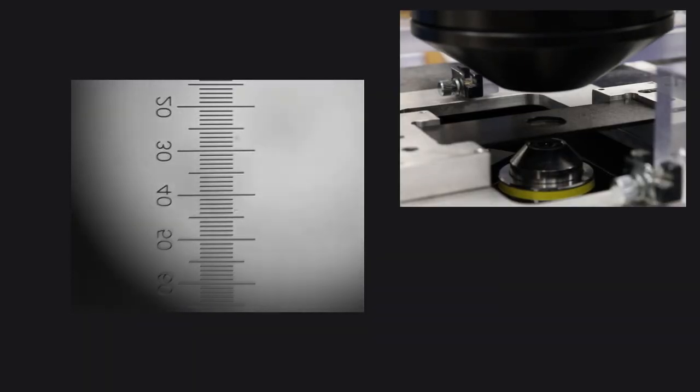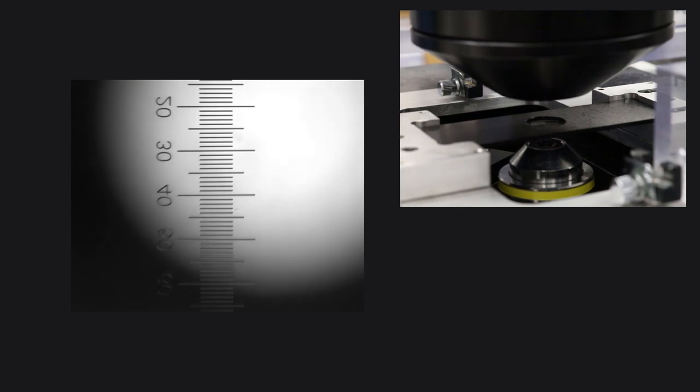Now we can start optimizing the illumination of the specimen by placing the condenser at the correct position, both vertically and laterally. The proper vertical position can be found with the help of the field stop. First I am closing the field aperture all the way. Then I lower the condenser until a more or less sharp image of the outline of this aperture is seen in the same plane as the specimen.